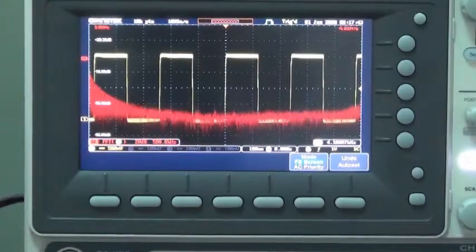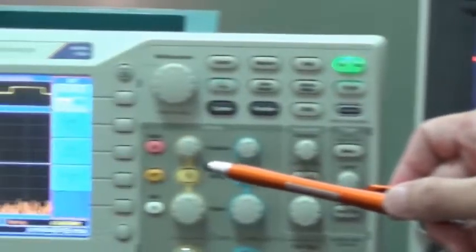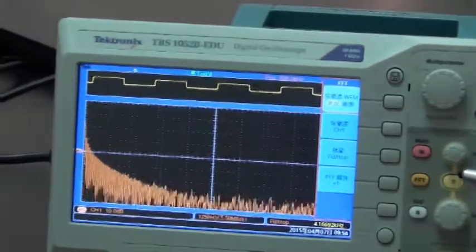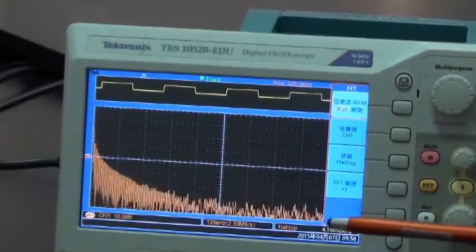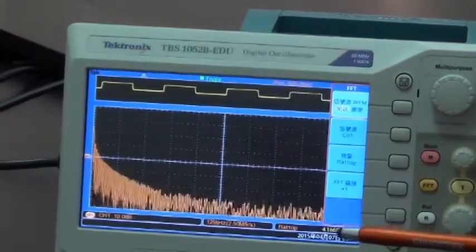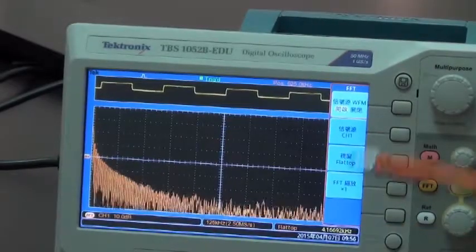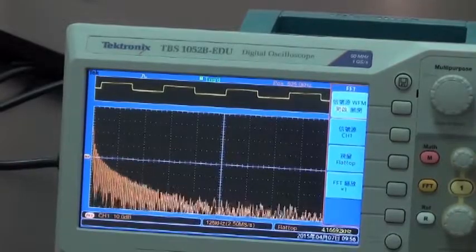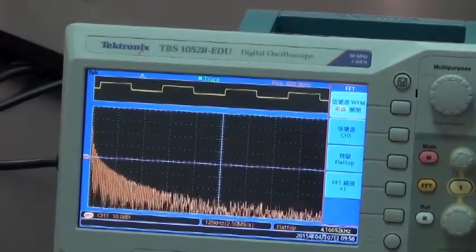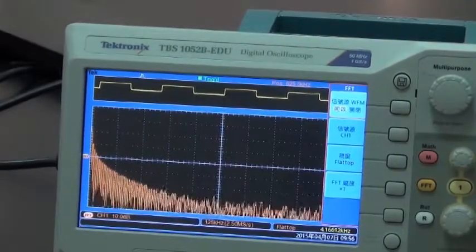For TBS-1000EDU oscilloscope, its waveform display is rough and not delicate enough due to a lack of sufficient FFT display points. On top of that, TBS-1000EDU is relatively very slow in waveform update rate.